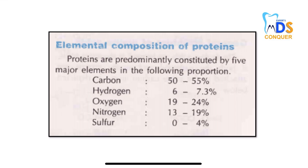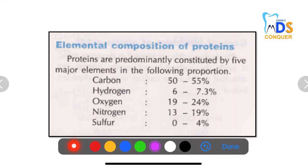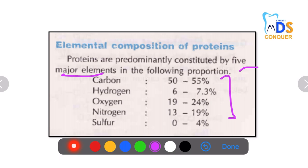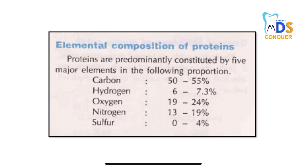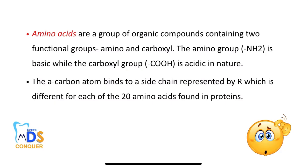If you see, these are the elemental composition of proteins, where it is constituted by 5 major elements: carbon, hydrogen, oxygen, nitrogen, and sulphur. The composition is quite important, and the exact numerical values may be asked, so just have a look at this.